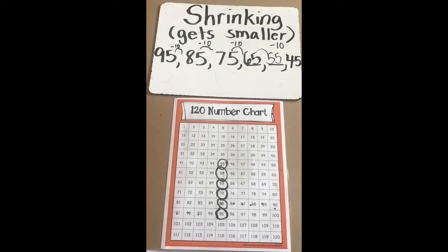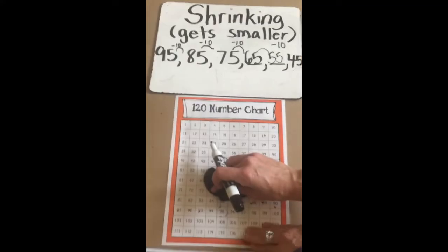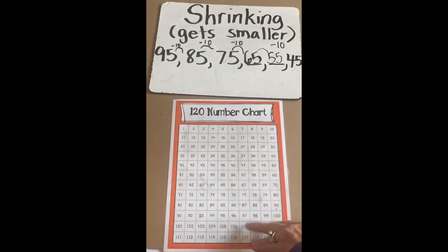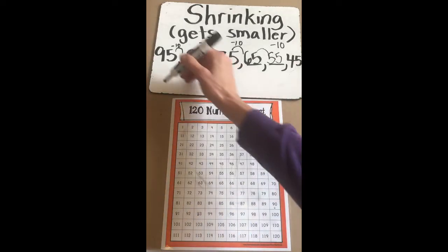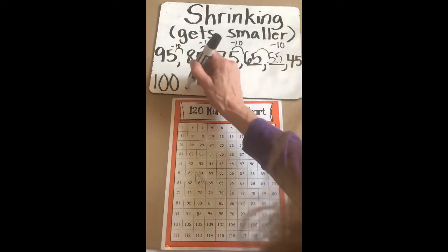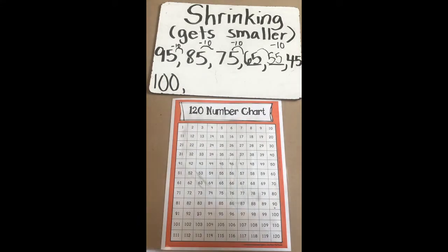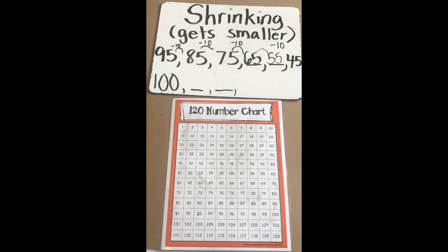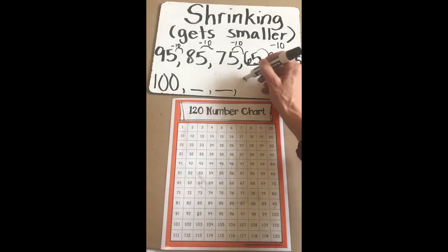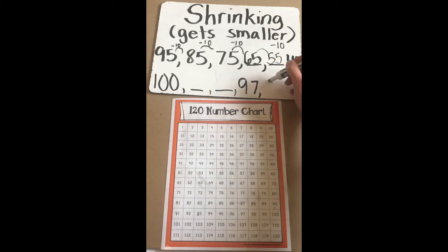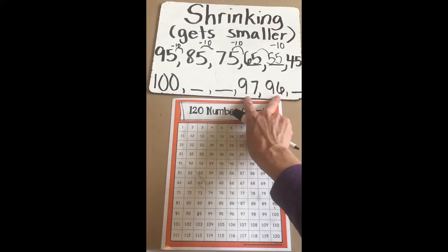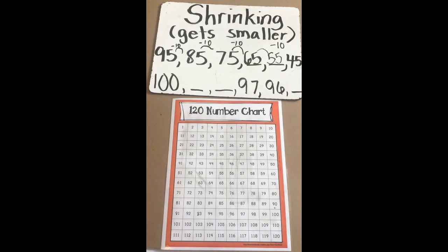Let's try one more shrinking pattern. We're going to use our 120 chart and start with 100. We can't figure out our rule yet, can we? Let's add in some more numbers in our pattern and see if that can help us. I only have two numbers that are close together, but I can use just those two to help me figure out the rule.